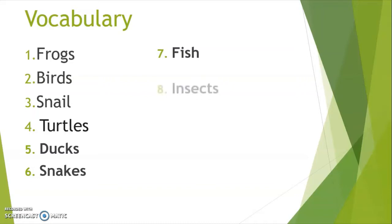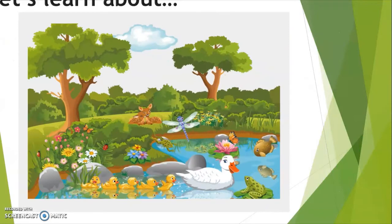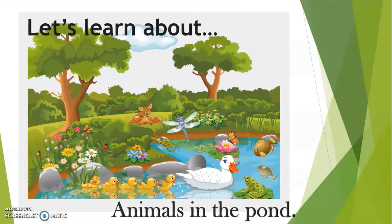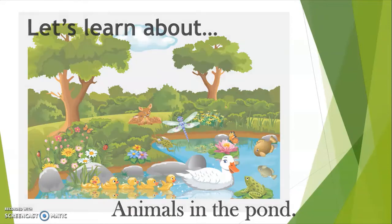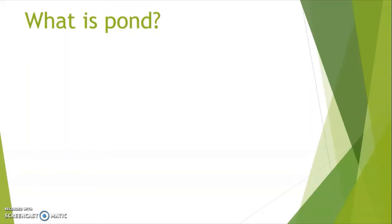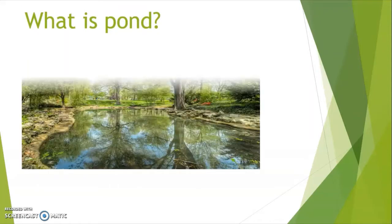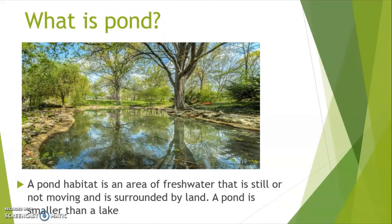Number eight: insects. All right, so let's learn about the animals in the pond. Are you ready? What is a pond? A pond habitat is an area of fresh water that is still, or not moving, and